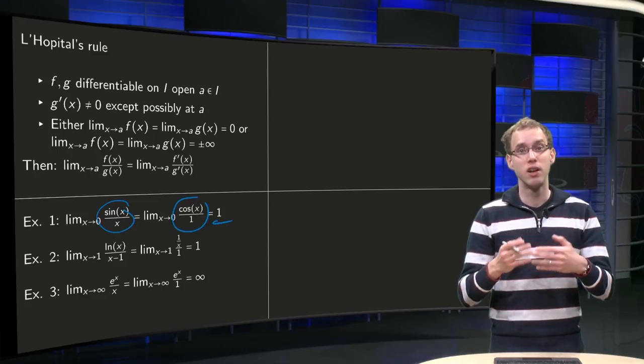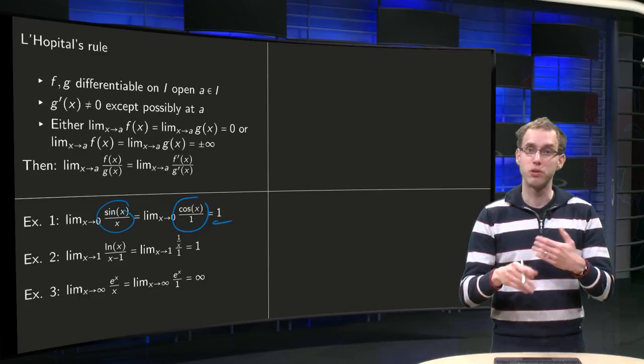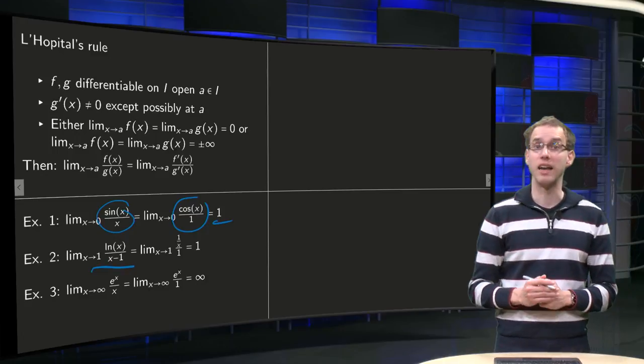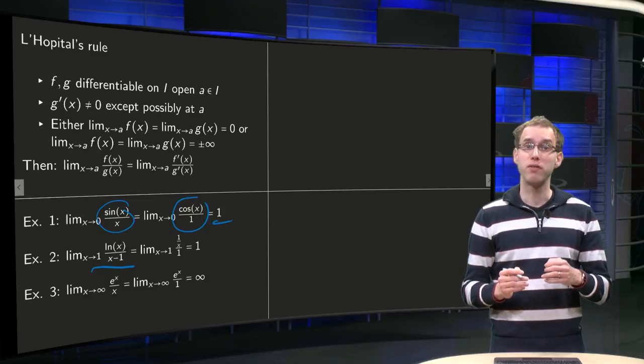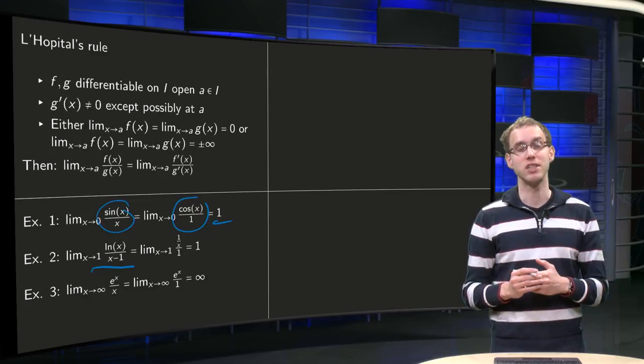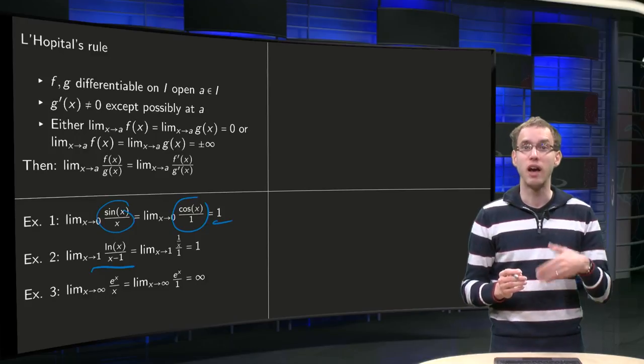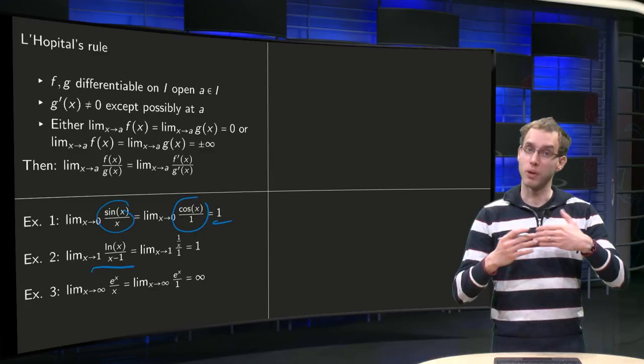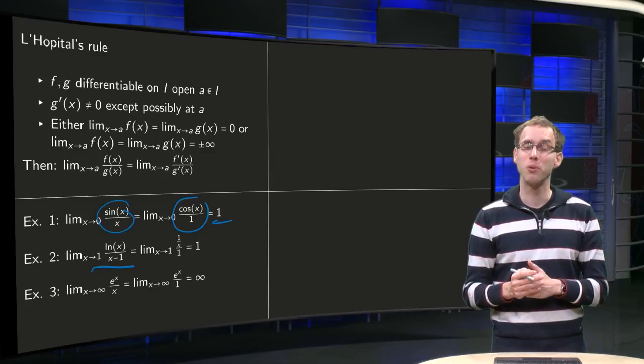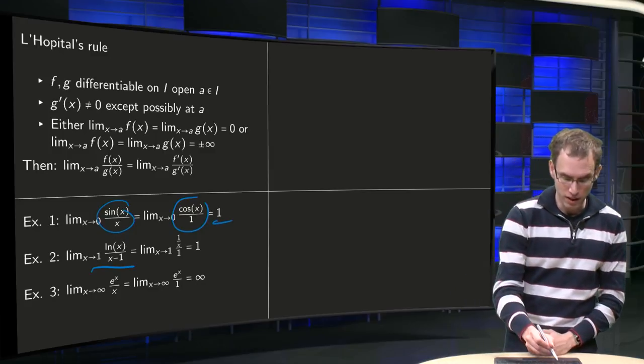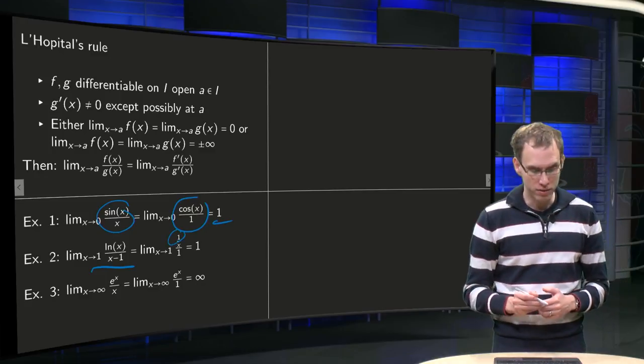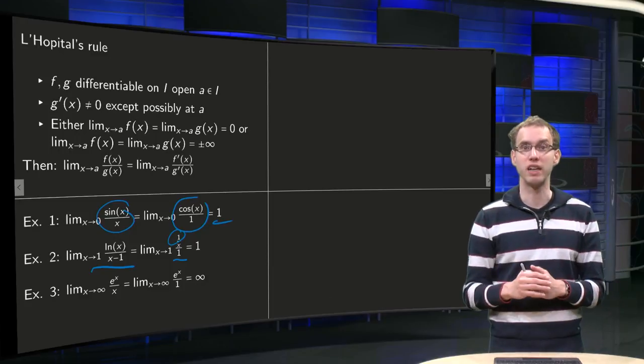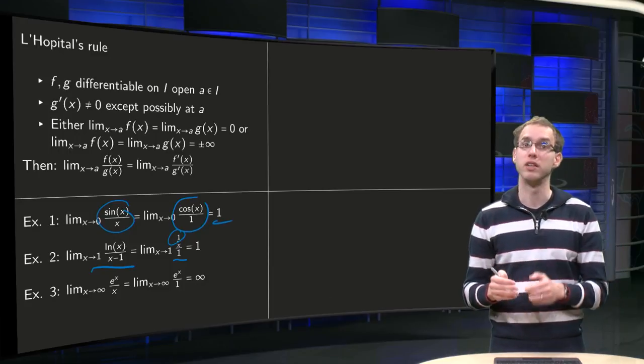So we see that L'Hôpital's rule allows us to compute some limits very fast. A similar example for the ln of x over x minus 1. If you plug in x equals 1 straight away we get ln of 1 over 0. ln of 1 is also 0, so we get 0 over 0. So we can try to apply L'Hôpital's rule. The derivative of ln of x equals 1 over x. Derivative of x minus 1 equals 1. So we get a new limit 1 over x over 1, x to 1 is just 1.